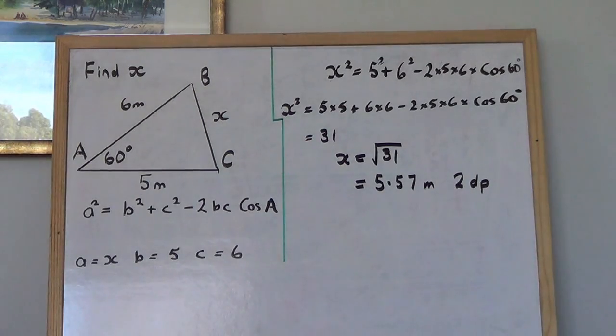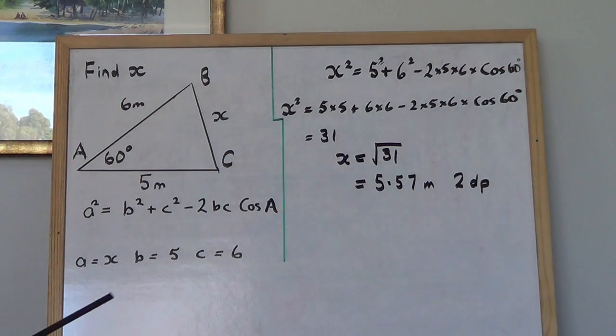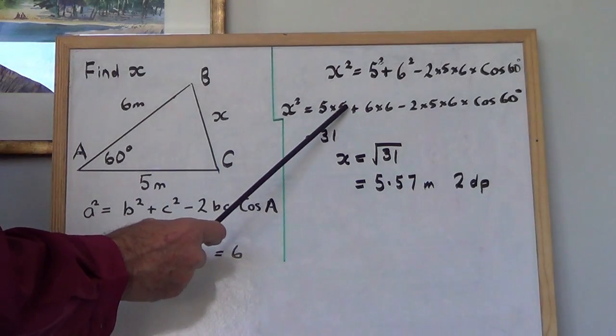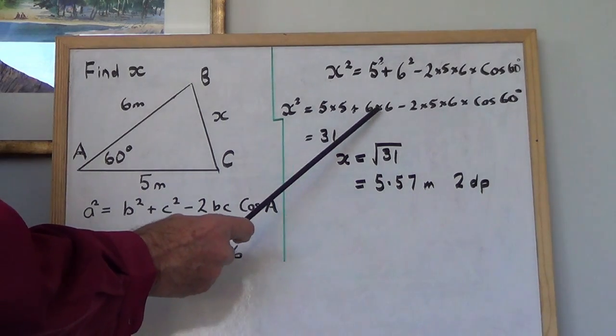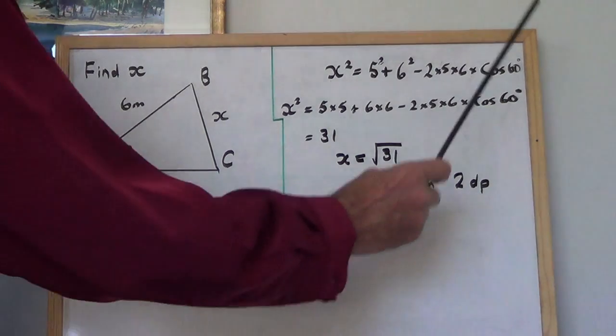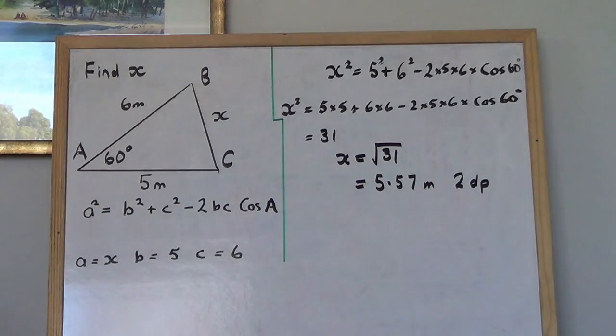And then you go through and just punch it straight into your calculator. So you just go 5, then times, then 5 plus 6 times 6 and so on right through. And when you're finished you press the equals and up you come with the answer which is 31.